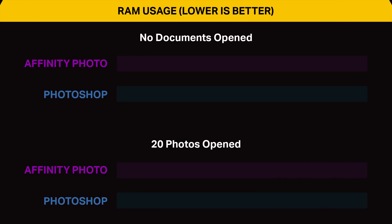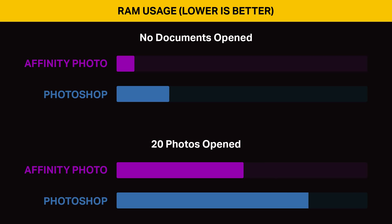Affinity Photo uses significantly less RAM than Photoshop. On a fresh start with no documents opened, Affinity Photo used 285MB of RAM, while Photoshop used 865MB. With 20 files opened, RAM usage increased significantly for both, but again with Affinity Photo using less RAM than Photoshop.